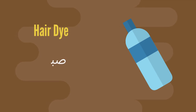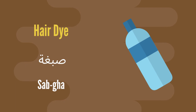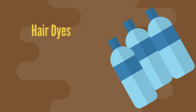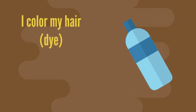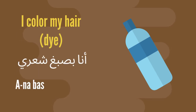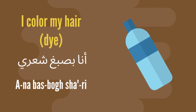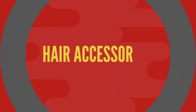Let's talk about hair dye. Hair dye is 'subha', 'subha'. The plural form for hair dyes is 'subah'. Now let's dive into phrases — I color my hair with a dye: 'ana basbubb sha'ri', 'ana basbubb sha'ri'.